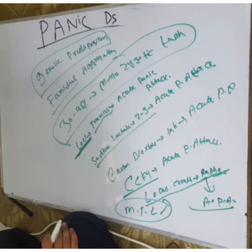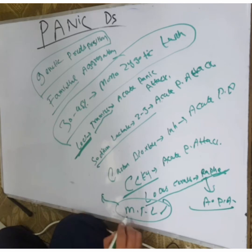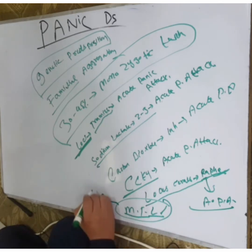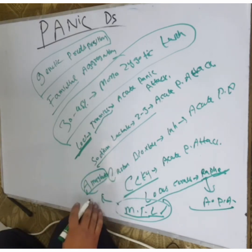When medial temporal lobe activation occurs, it activates the amygdala. When the amygdala is activated, there is also activation of the dorsolateral frontal cortex.